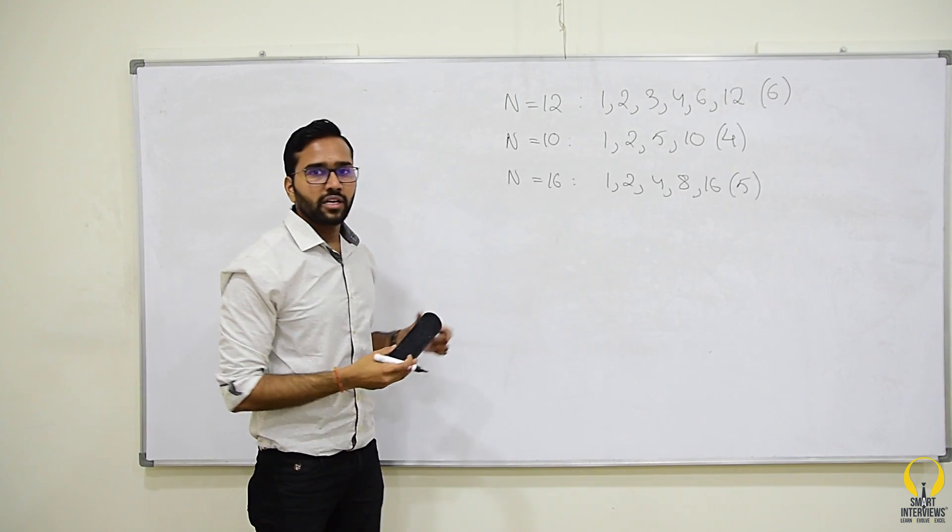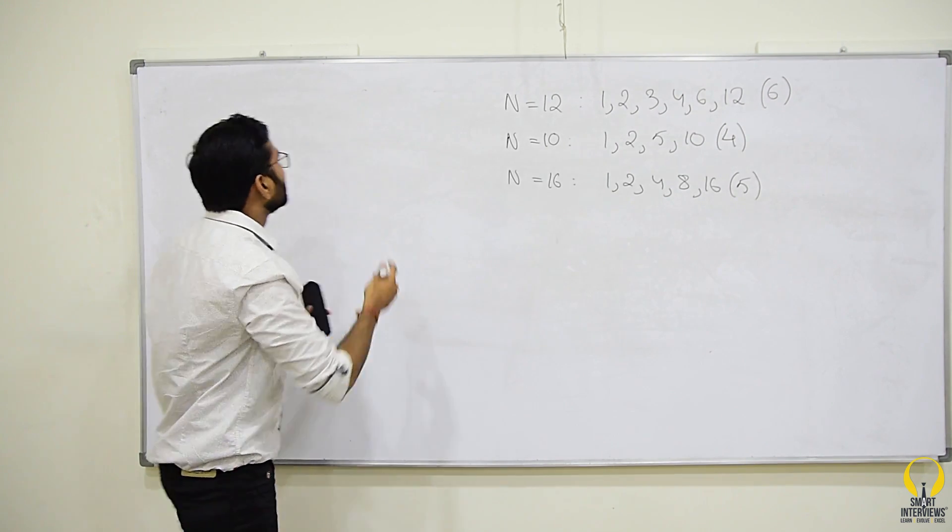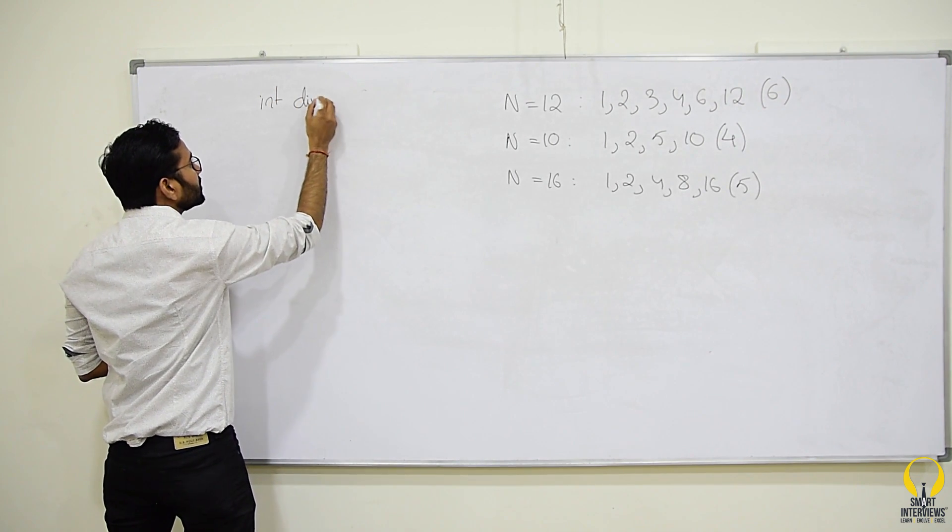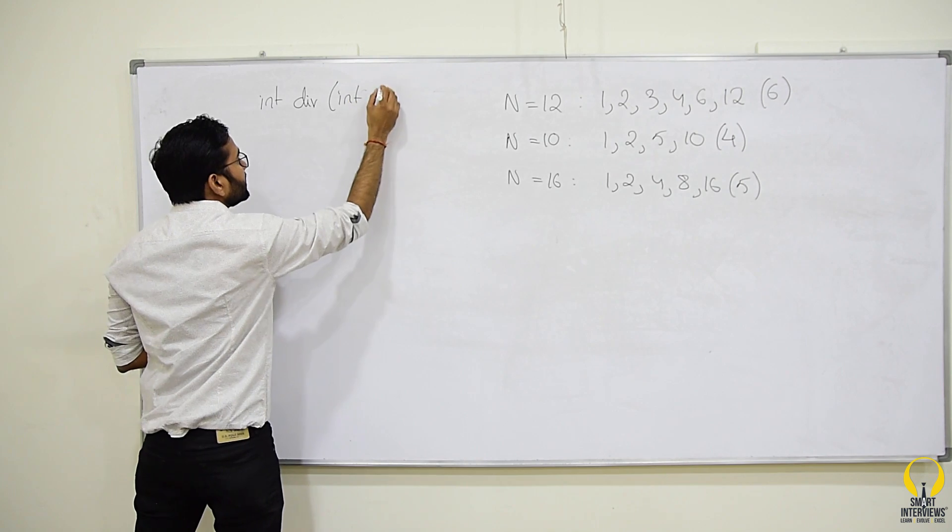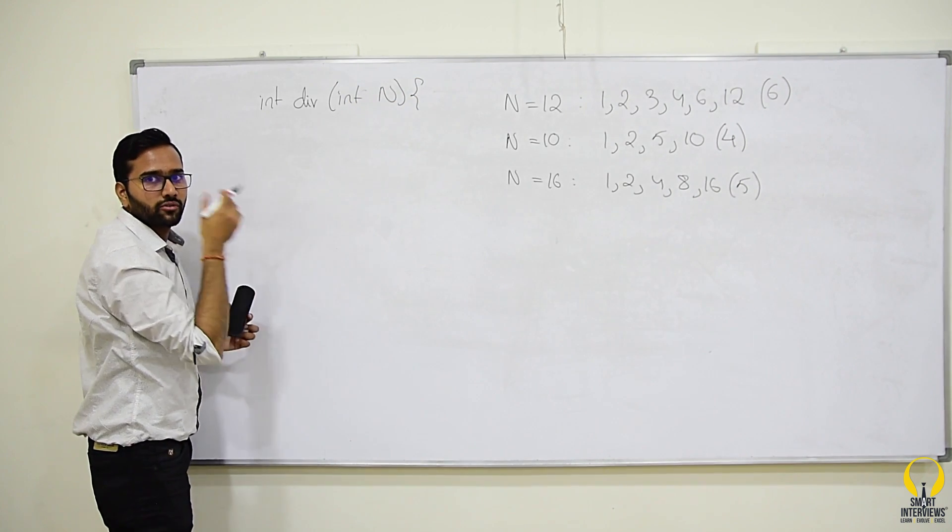So, given a number n, it will simply count the number of divisors and return it. In other words, you have to complete this function which takes a number n, it will return the count of divisors of n.